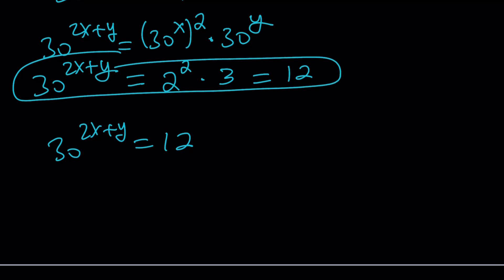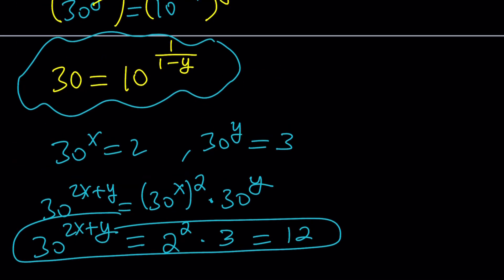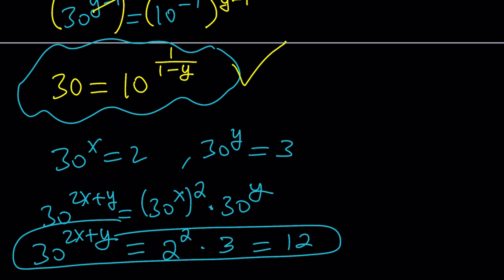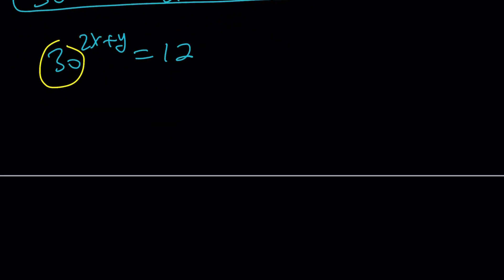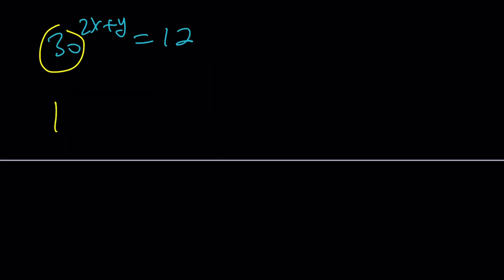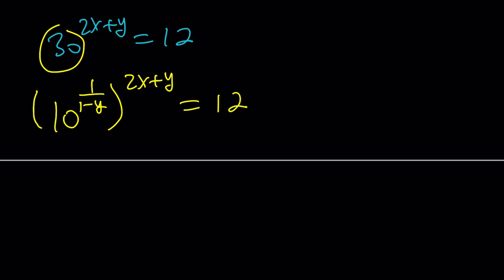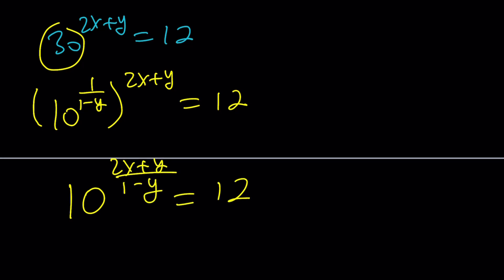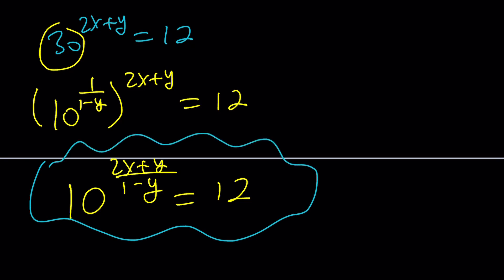Since 30 to the power 2x plus y equals 12, we replace 30 with 10 to the power 1 over 1 minus y. This gives 10 to the power 1 over 1 minus y, raised to the power 2x plus y, which equals 10 to the power 2x plus y over 1 minus y — exactly what we were trying to evaluate. And that equals 12.